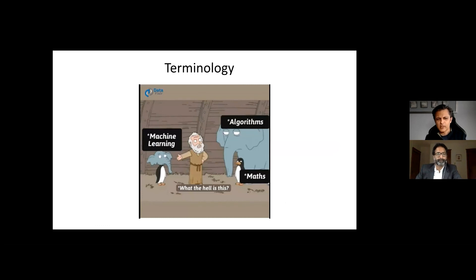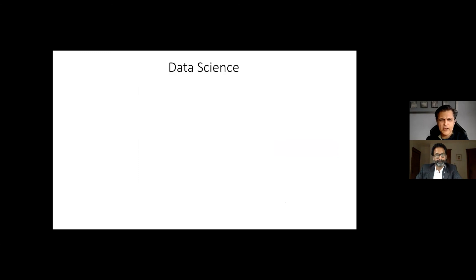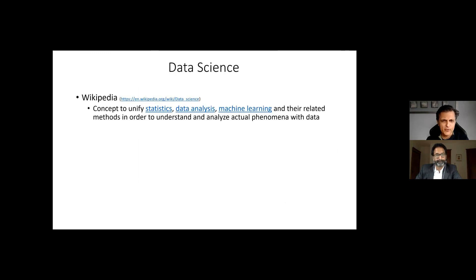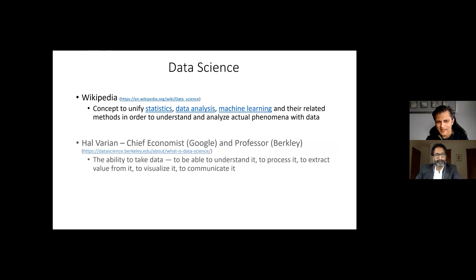I'm going to go through these quickly since you already have some background. What is data science? Wikipedia defines it as a concept to unify statistics, data analysis, machine learning, and related methods to understand and analyze actual phenomena with data. I prefer Hal Varian's definition — he's the chief economist at Google and a professor at Berkeley. He defines data science as the ability to take data, understand it, process it, extract value from it, visualize it, and communicate it.